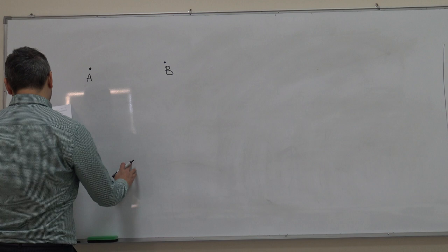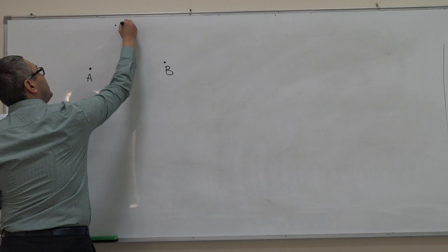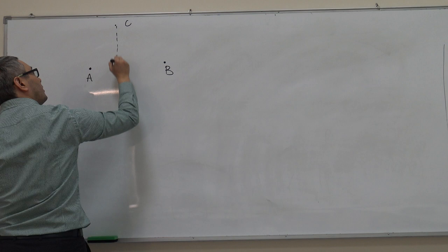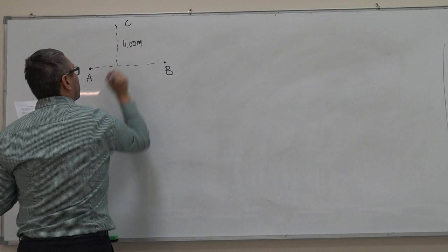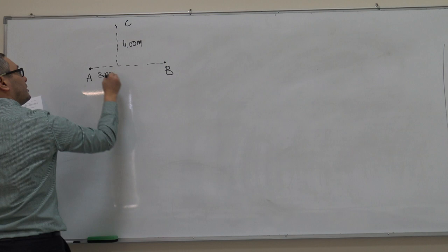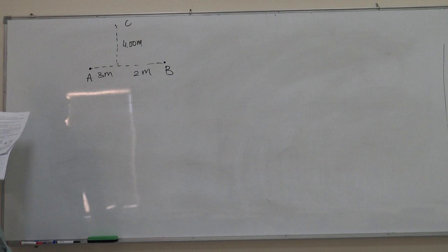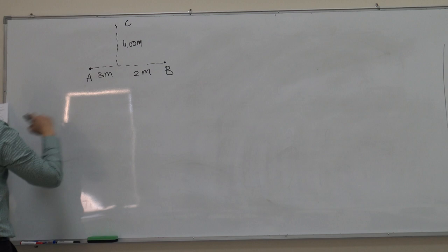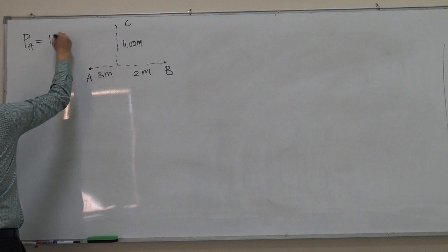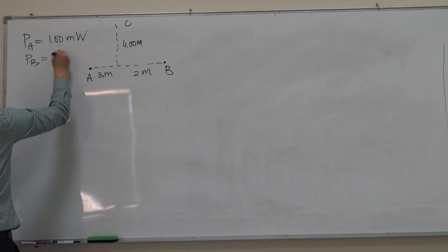The question is: what is the intensity level or the sound level at point C, which is located at a distance of four meters from the line connecting the two sound sources? This part is equal to three meters and this is two meters. We are given the power of each source. Power of source A is one milliwatt and power of source B is one and a half milliwatt.